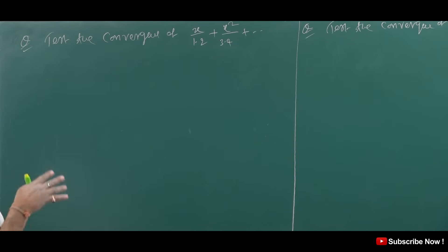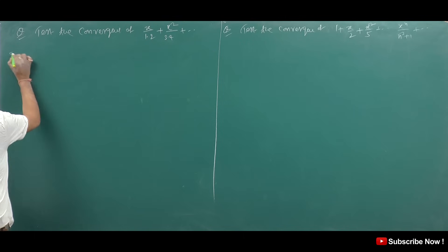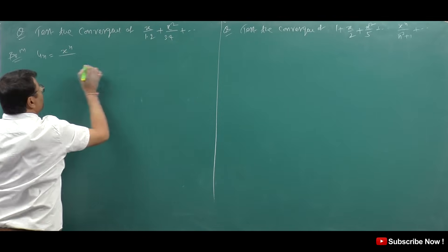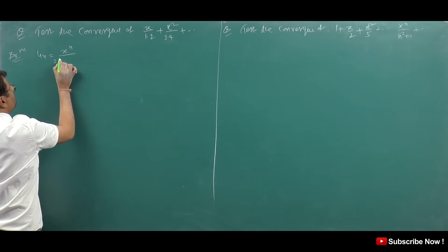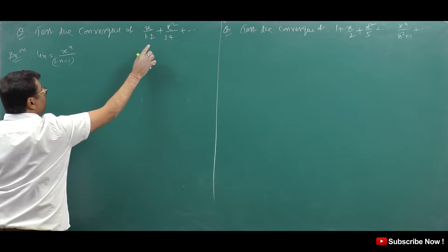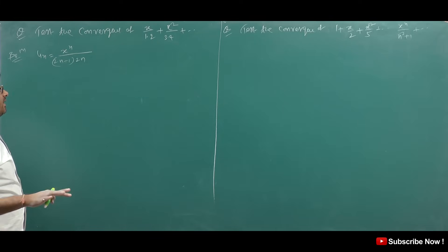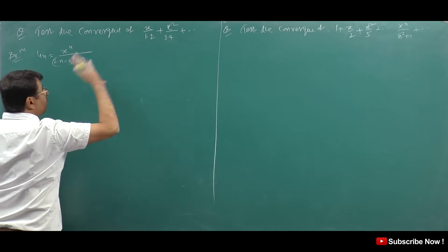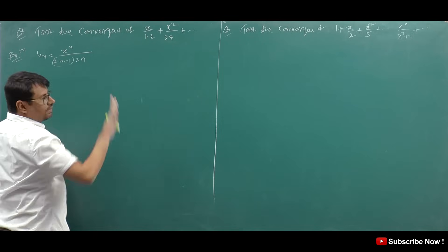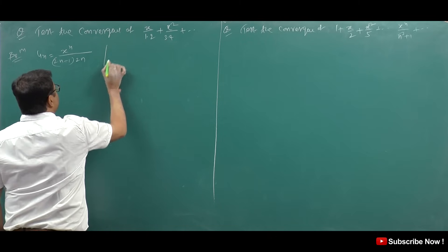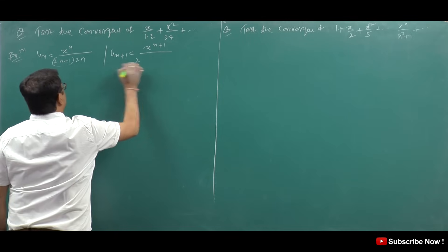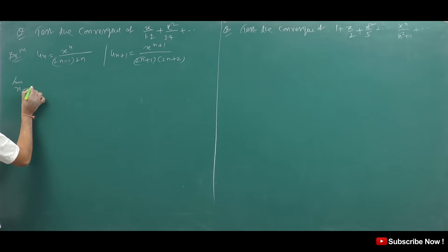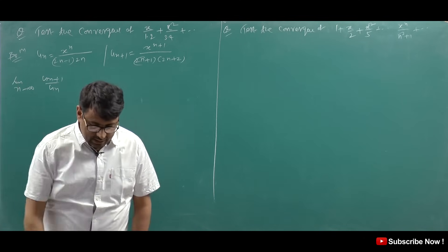Now for the second example: x² upon 3·4 — so we place n = 1 to get 1 term, n = 2 to get the next term, etc. You can check the n-th term is right. Now what is the n+1 student? It is x to the power n+1. And if you substitute n+1, then you will have 2(n+1) in the denominator. Now what is the student? Limit n tends to infinity of u_(n+1) upon u_n.